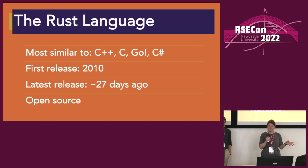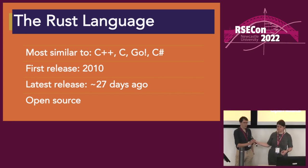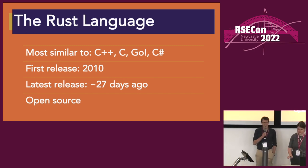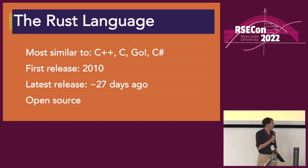The latest release was just under a month ago — about 29 days — and it is completely open source. It's under active development, and there's also a nightly release of the compiler, called the nightly version.